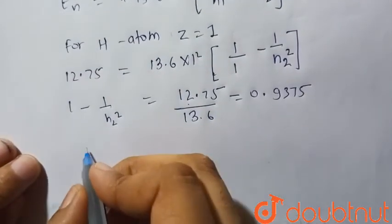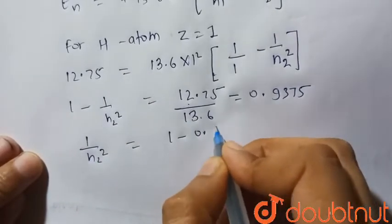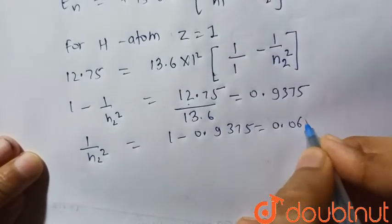So 1 upon N2 square is equal to 1 minus 0.9375, which will be equal to 0.0625.